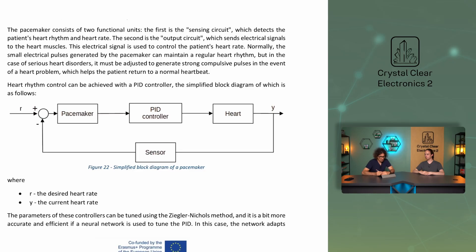The circuit receives its signal directly from the heart — this is the current heart rate, represented by Y. R is the desired heart rate, which is what we want to deliver to the heart, forming our control circuit. The parameters of these controllers can be tuned using the Ziegler-Nichols method, and it is more accurate and efficient if a neural network is used to tune the PID, as the network adapts better to heart rate control, resulting in lower overshoot, shorter settling time, and a faster ramp-up time.